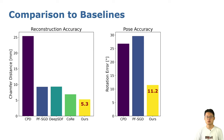Additionally, we compare our method with previous methods quantitatively on reconstruction accuracy and pose accuracy. It is shown that our method in yellow has the smallest chamfer distance and rotation error. Note that only two of the baselines can also estimate the fruit pose.